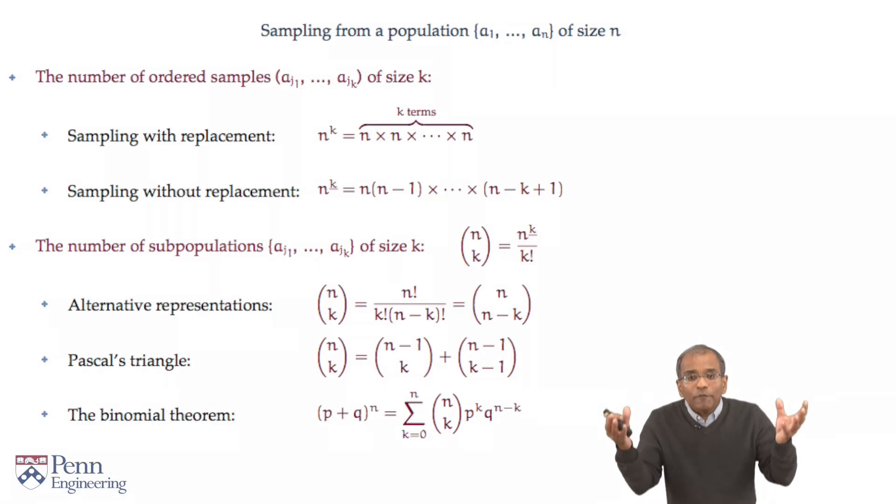The binomial coefficients themselves give you various identities and various alternative representations. For example, n choose k may be written alternatively in other forms involving ratios of factorials, or in terms of yet other binomial coefficients, such as n choose n minus k.